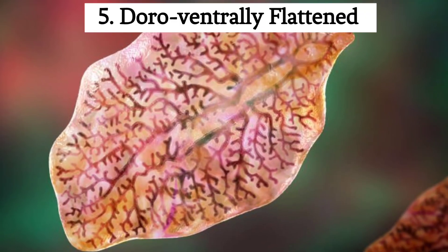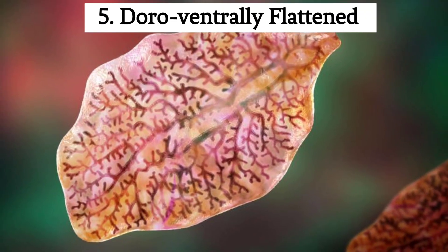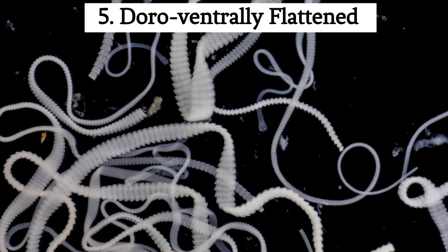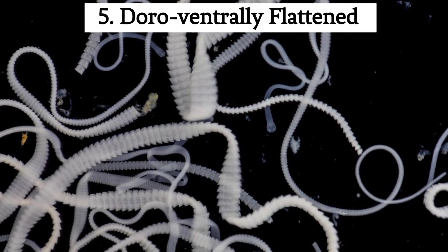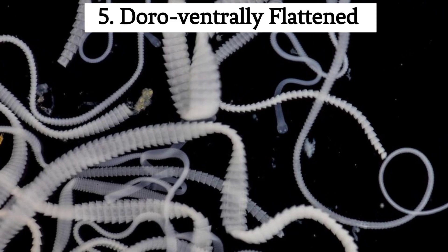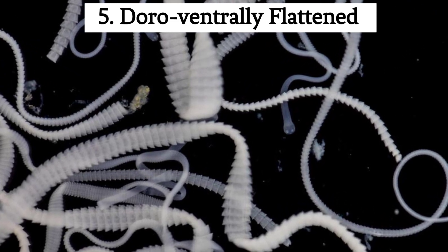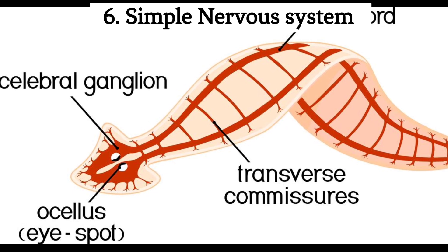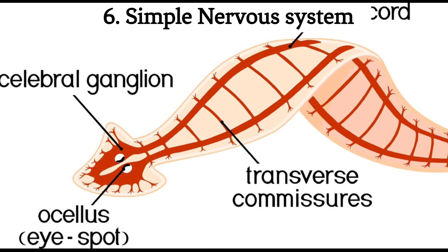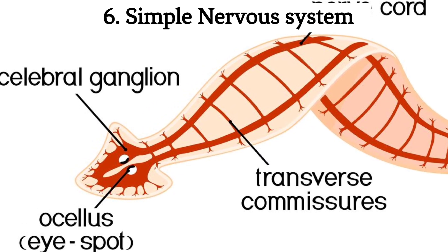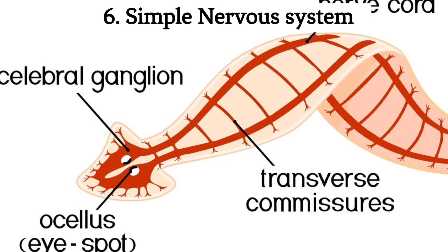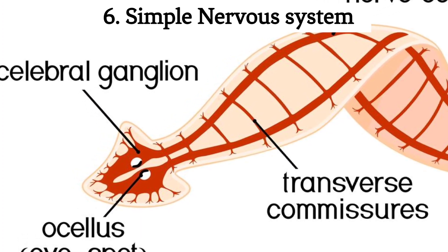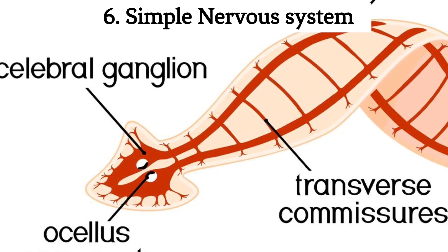Fifth, flattened body: as the name suggests, flatworms have a flattened, ribbon-like body shape, which allows for efficient gas exchange through diffusion across their body surface. Sixth, simple nervous system: flatworms have a simple nervous system consisting of a ladder-like arrangement of nerve cords and ganglia. Some possess primitive cephalization with nerve clusters in the anterior end.